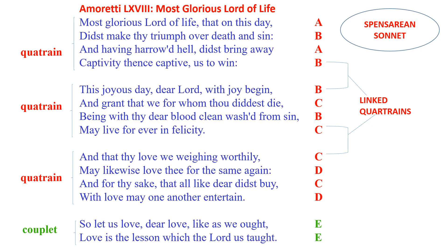The quatrains rhyme scheme is linked or interconnected because the first quatrain's rhyme B is carried over to the next quatrain, and the second quatrain's rhyme C is carried over to the third quatrain. The couplet is similar to that of the Shakespearean couplet. That covers the structure of the Spenserian sonnet.